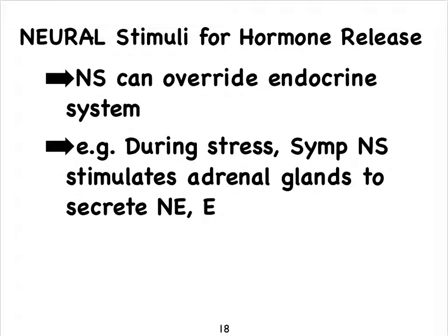In summary, there are three types of stimuli that can control the release of hormones. Either some solute inside the blood or even the lymph is going up or down in concentration and that can trigger the release of a particular hormone. Or a hormone triggers the release of another hormone by another gland. And finally, the sympathetic nervous system can also trigger the release of hormones. So we have humoral stimuli, hormonal stimuli, and neural stimuli.